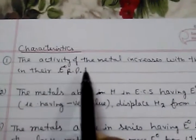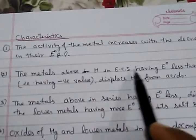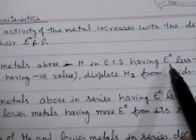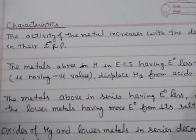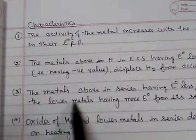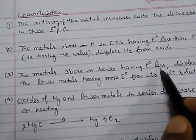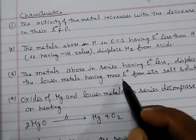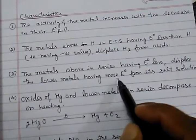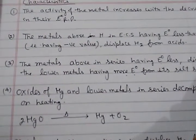Metals above hydrogen in the electrochemical series having E0 less than hydrogen (i.e., negative value) can displace hydrogen from acids. Also, metals higher in the series with lower E0 can displace metals lower in the series from their salt solutions. For example, zinc can displace copper from copper sulfate solution.